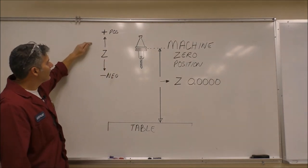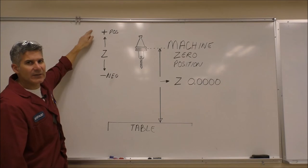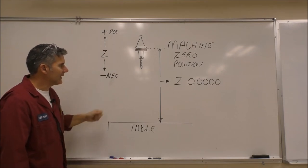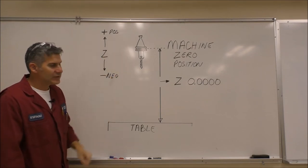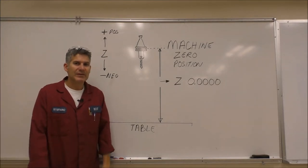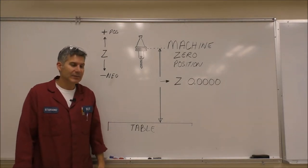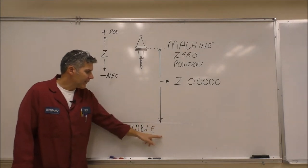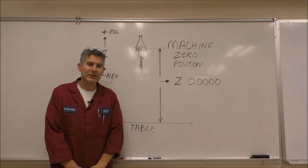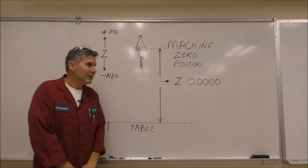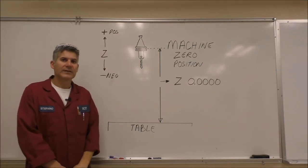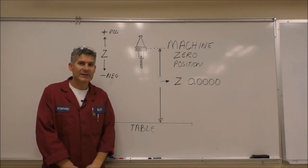As you can see, if we move up in this direction it would be Z positive; down will be Z negative. So as we come down to measure off of our 1-2-3 blocks, the Z position will be a negative number. We're also going to reference off our table, which is very repeatable and will not change. So we are using two very repeatable reference points to measure our tool length offsets.